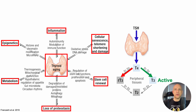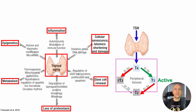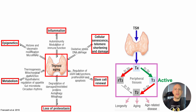T3 can also be degraded into T2, further reducing the active thyroid hormone concentration. Collectively, thyroid hormone metabolism can impact longevity, as well as aging and age-related disease.